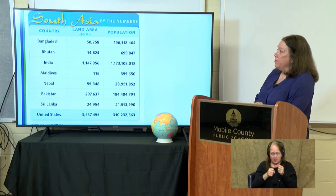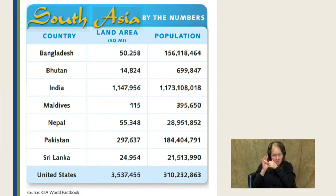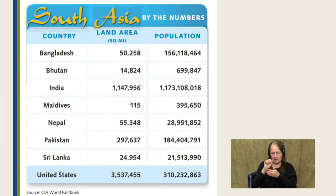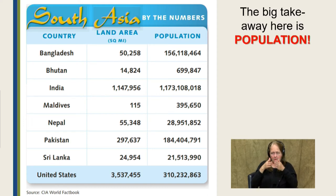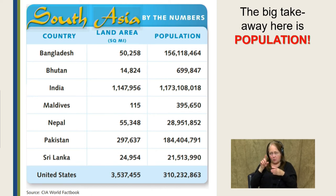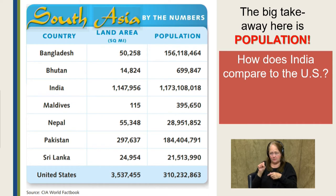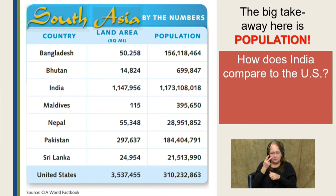Let's look at South Asia by the numbers. These are all seven countries of South Asia with their land area and estimated population, with the United States as a reference point. The big story is India's population: according to this data, the population was 1.1 billion people. Comparing land area, India is smaller than the United States, but the US population is 310 million — so India has a much higher population density.